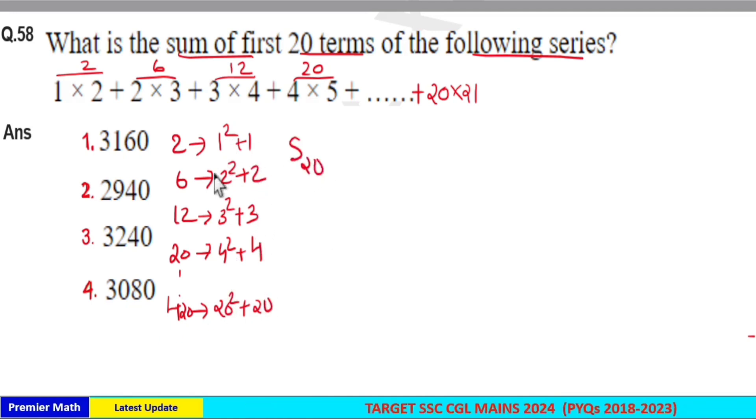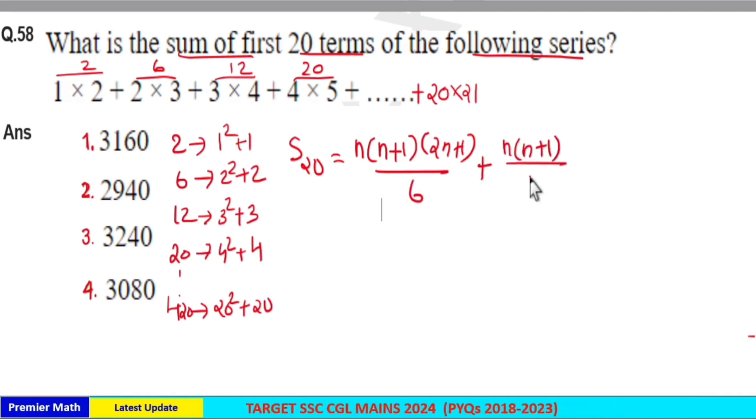Then sum of these 20 terms is equal to sum of square of first n natural numbers, which is n into n plus 1 into 2n plus 1 divided by 6, plus sum of n natural numbers, which is n into n plus 1 divided by 2.